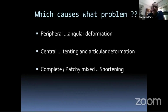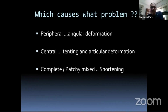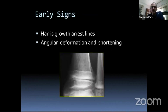Peripheral growth arrests cause angular deformation. Central causes tenting and articular deformation. A patchy or complete growth arrest ends up with shortening. Every growth arrest, depending on how the damage went through the physis and which blood supply was damaged, will give you combinations of these.